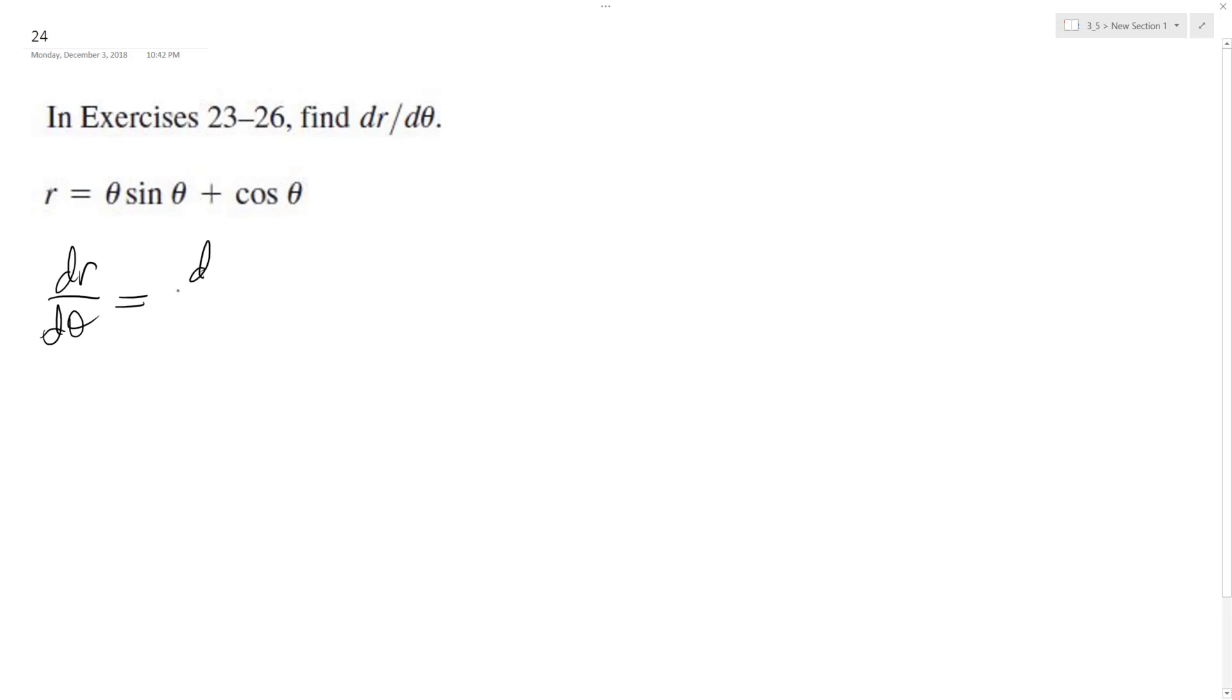d/dθ of θ times sin θ, plus θ times d/dθ of sin θ, plus d/dθ of cos θ. So we end up with 1 times sin θ, plus the derivative of cosine is negative...